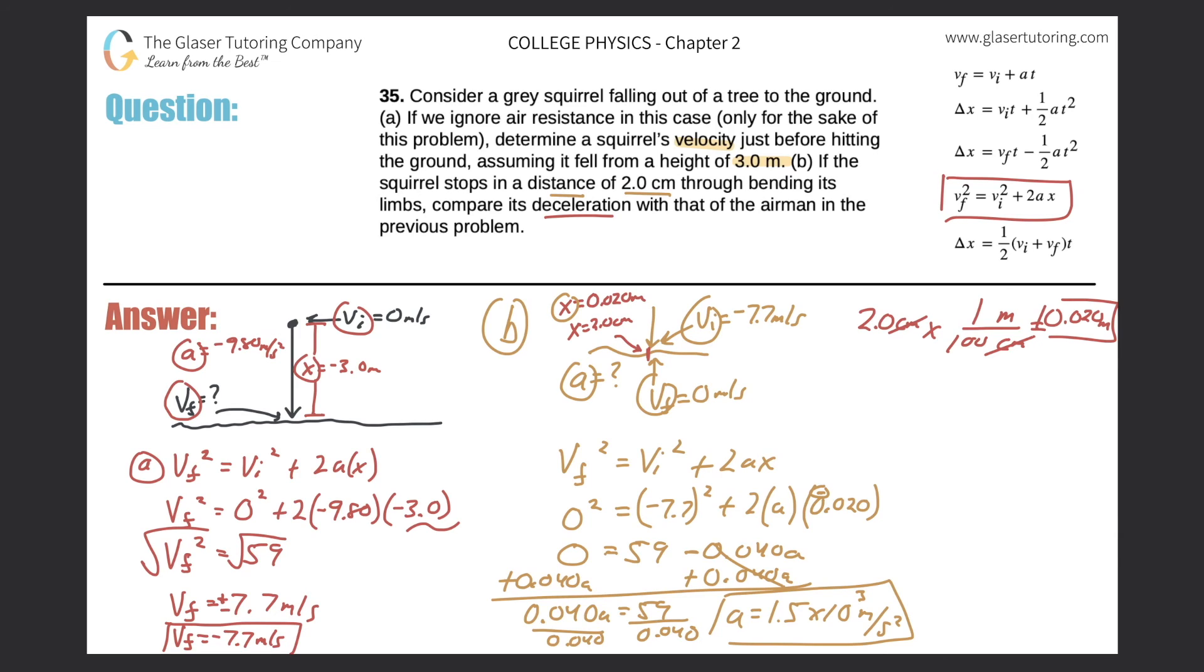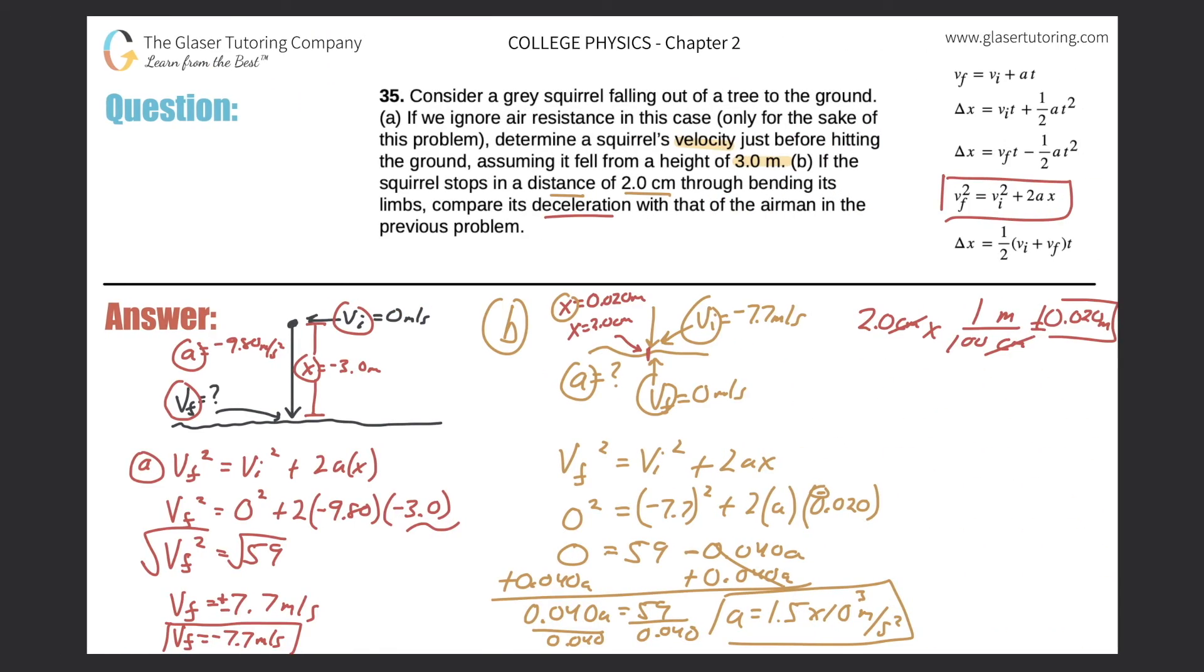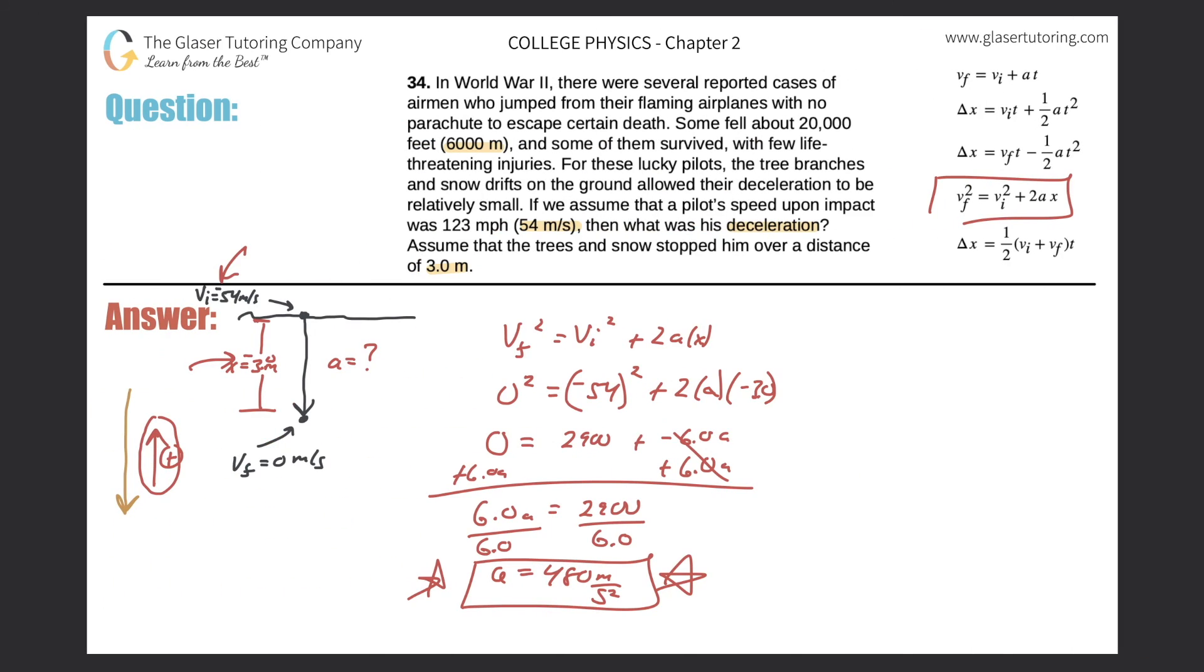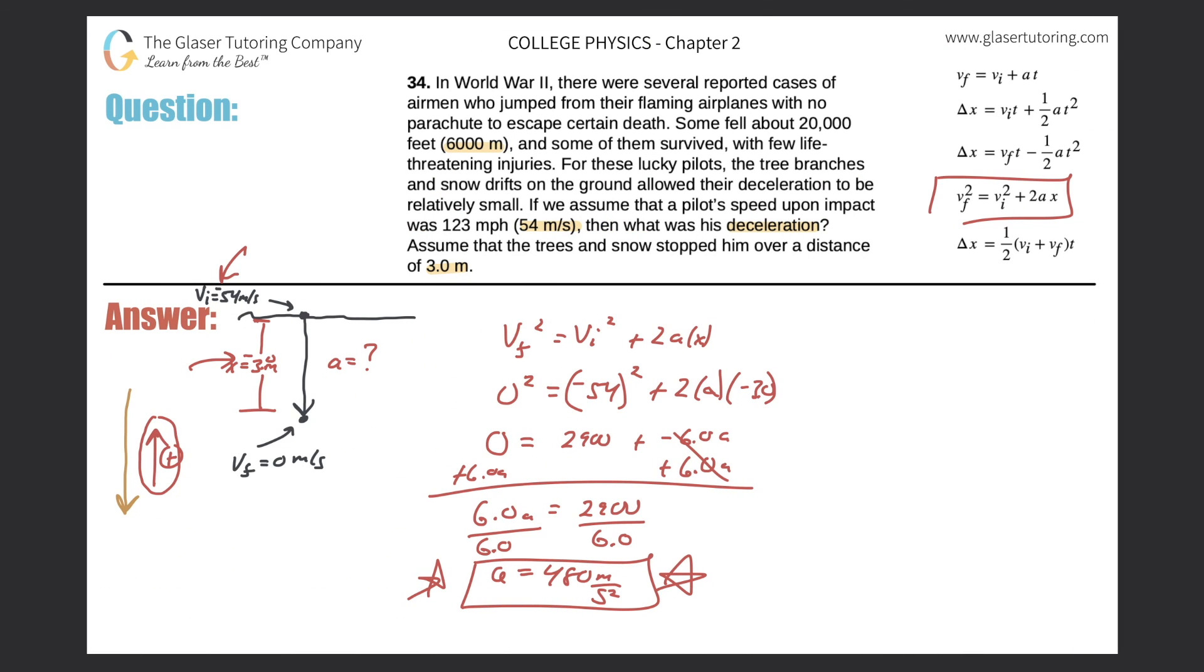It says compare that with the deceleration of the airman in the previous problem. Let's just flip back to the previous problem. Here it is. The deceleration of the airman was 480 meters per second squared. So the squirrel's deceleration is almost three times greater than the airman's. It's kind of crazy if you think about it. The airman fell 6,000 meters.